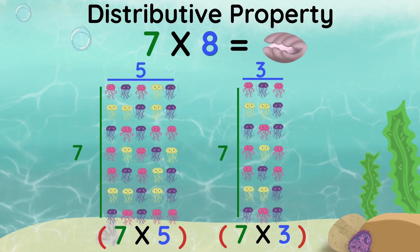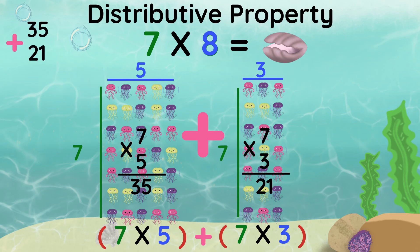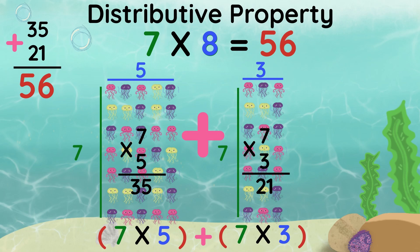7 times 5 is 35, and 7 times 3 is 21. Finally, we add them together. 35 plus 21 equals 56. That means 7 times 8 equals 56.